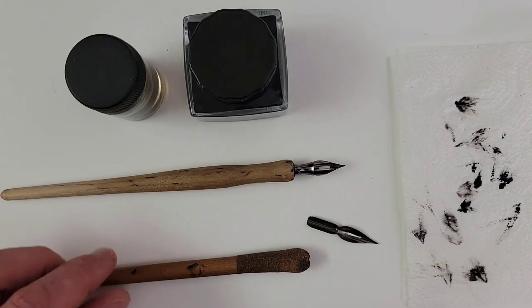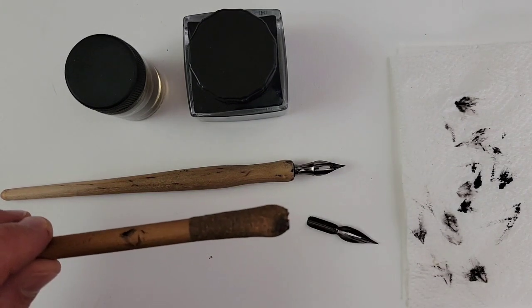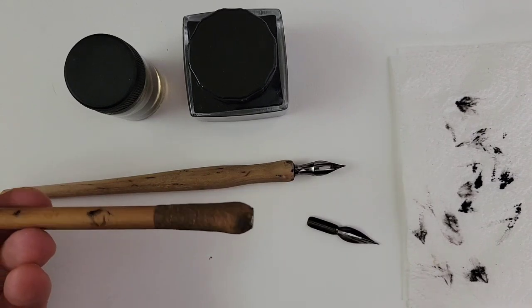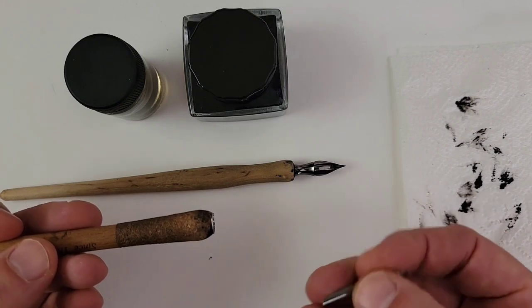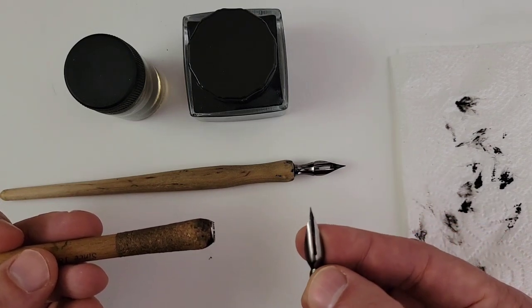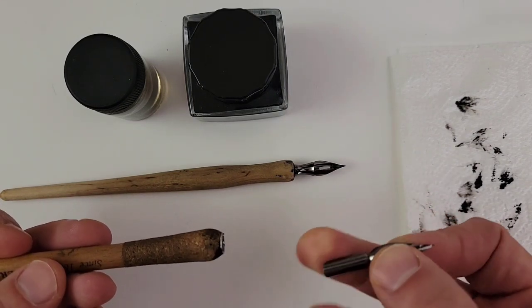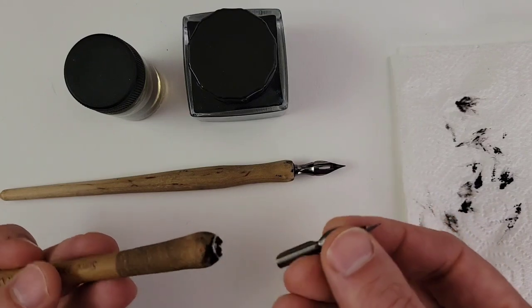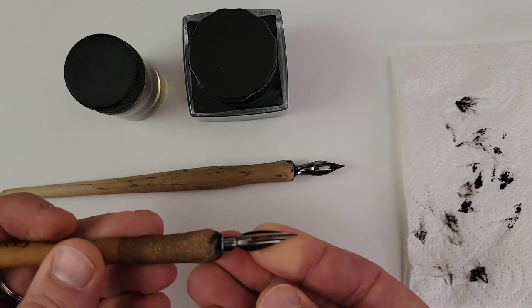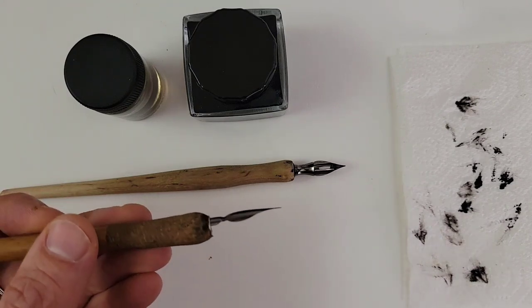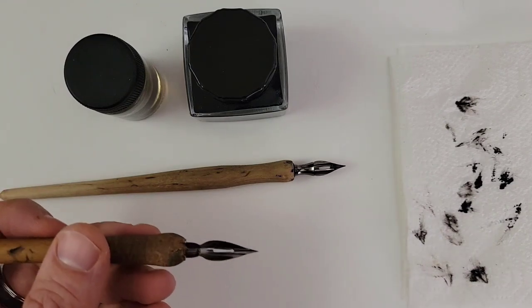The pen consists of two parts. You've got the handle, which in this case is wood but can also be made of metal or plastic. And I've got the pen nib here, which is steel. The steel pen nib seats into the end of the wooden holder just like that. And you are now ready to dip it into the ink and start drawing.